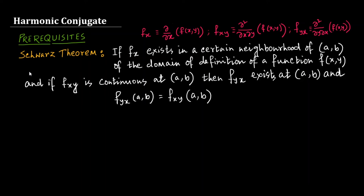Most welcome to the 10th lecture of my series on complex analysis. In this video, I shall show you that both the real and imaginary parts of an analytic function are harmonic functions. And if one of these two parts is given, how to find out the other one, which is known as the harmonic conjugate of the one that is given.